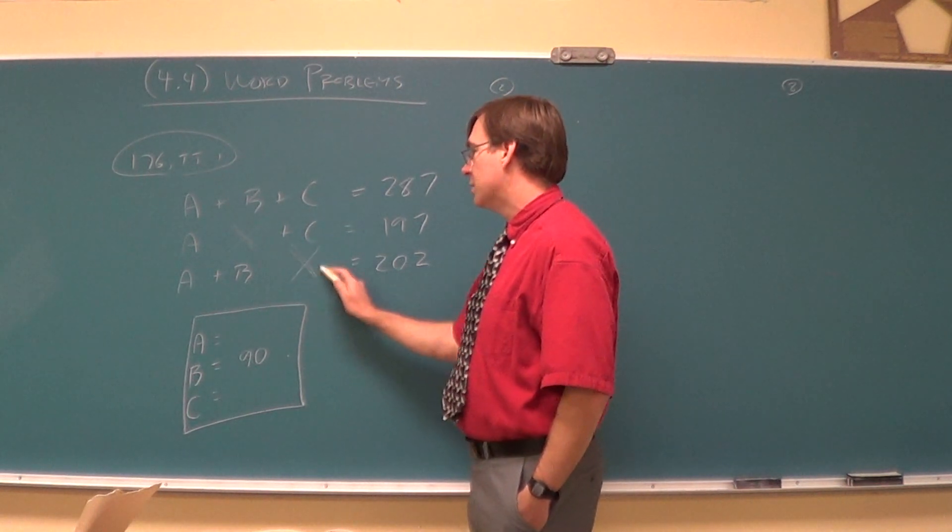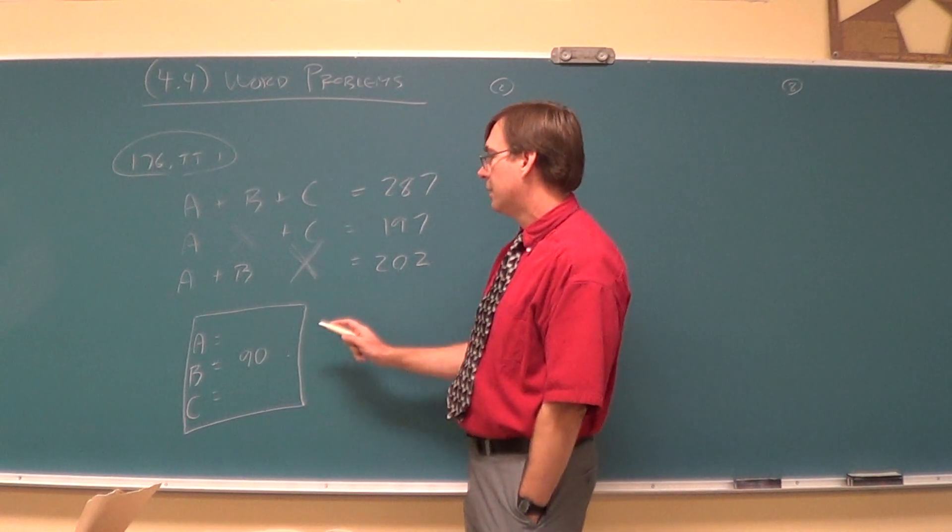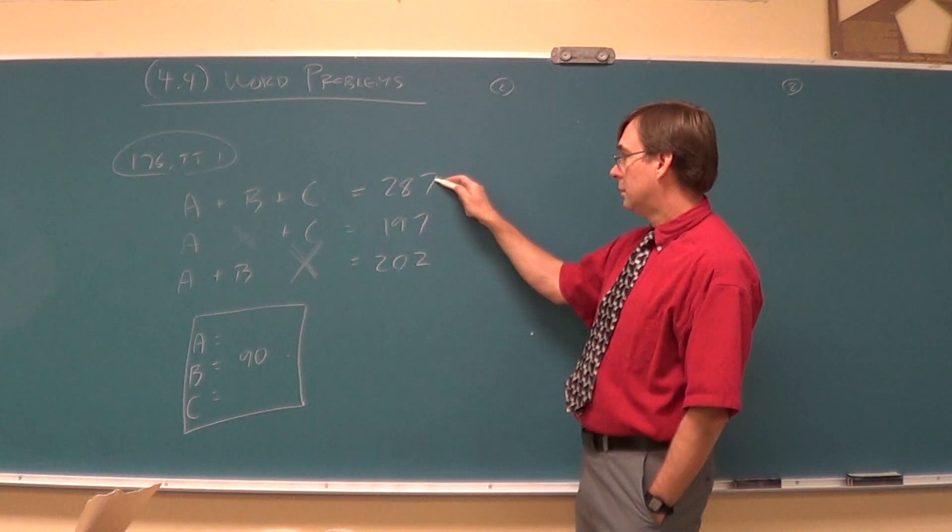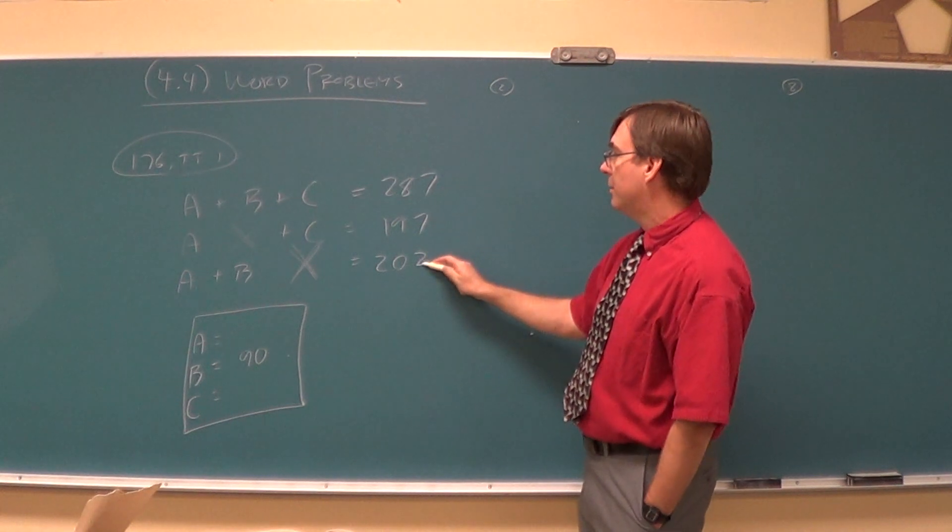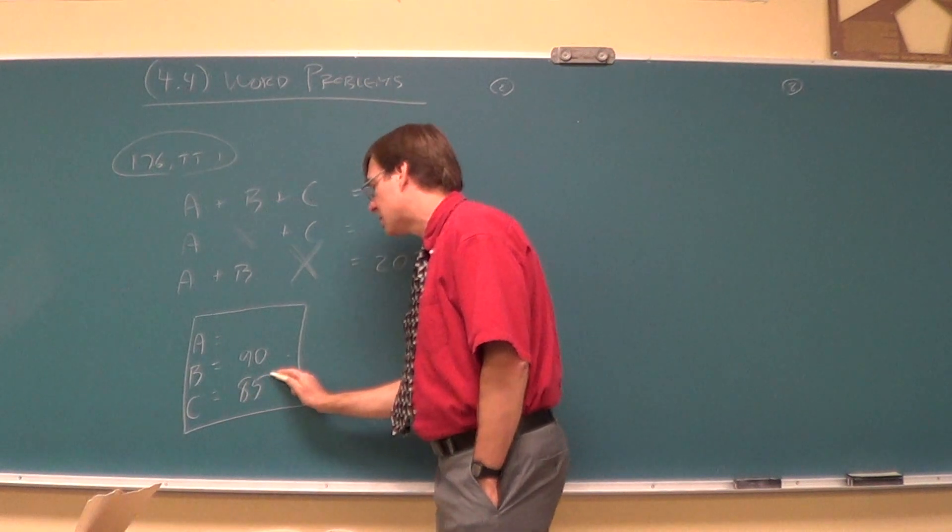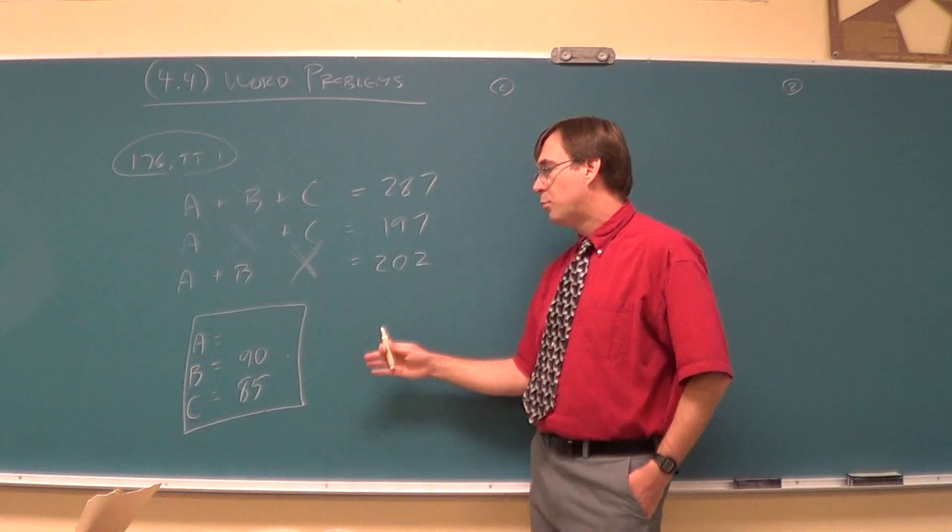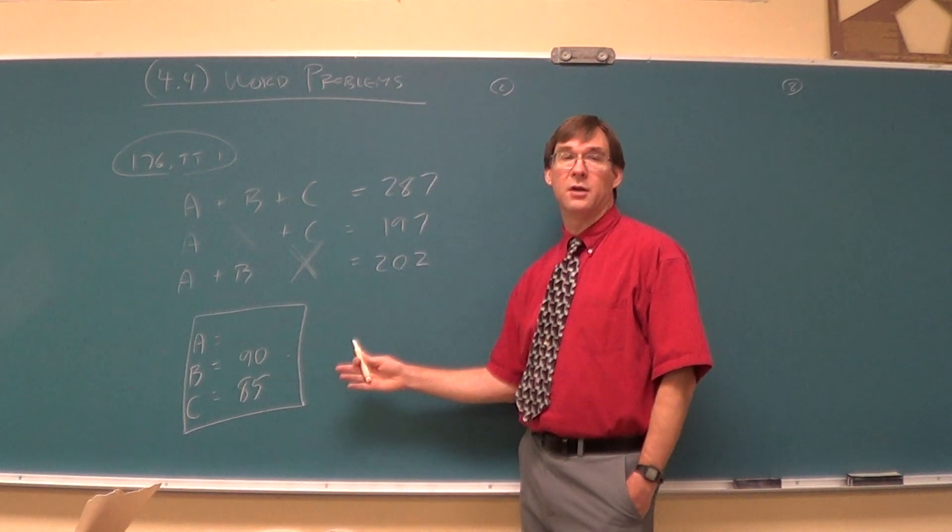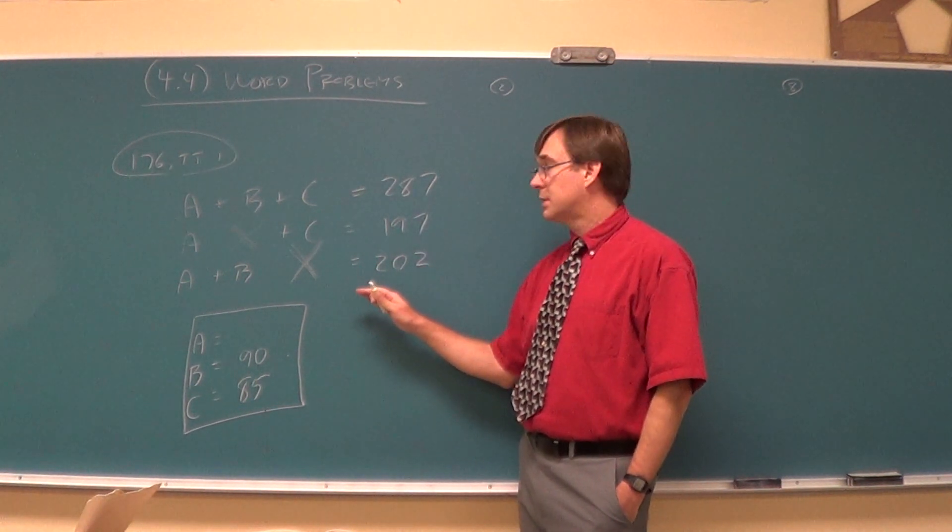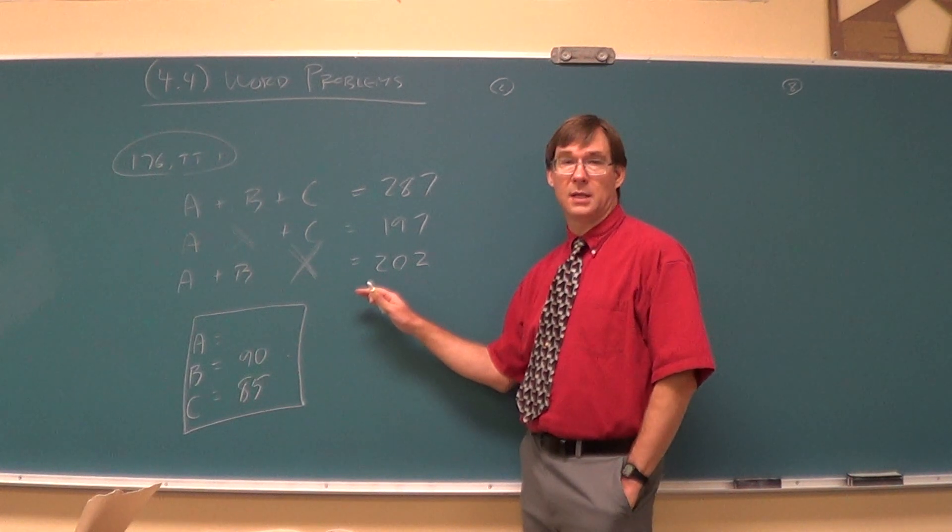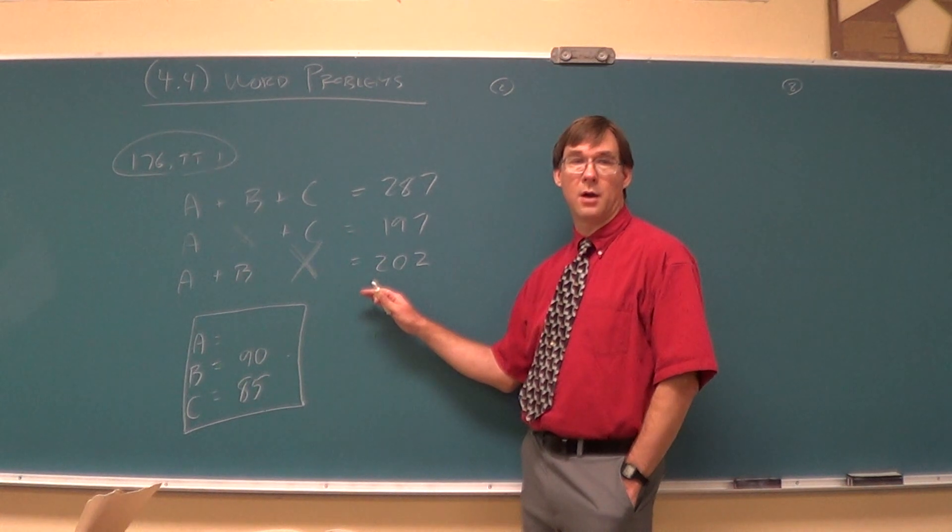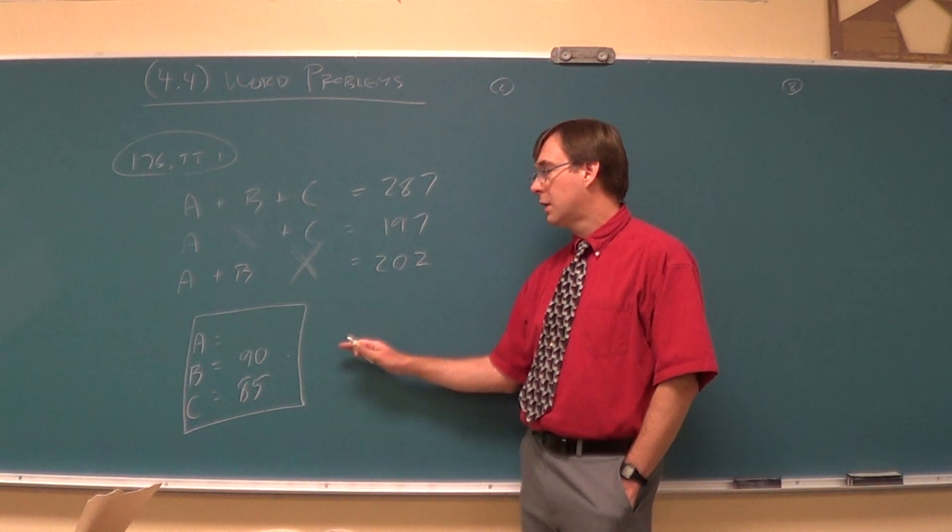This equation, we shut down the C machine. So how are you going to get the C number? By subtracting. 287 minus 202 can tell you that the C is 85. B and C are the two easier ones to get. You can get them pretty immediately by just subtracting the right numbers. Does anybody need me to help you get to there?